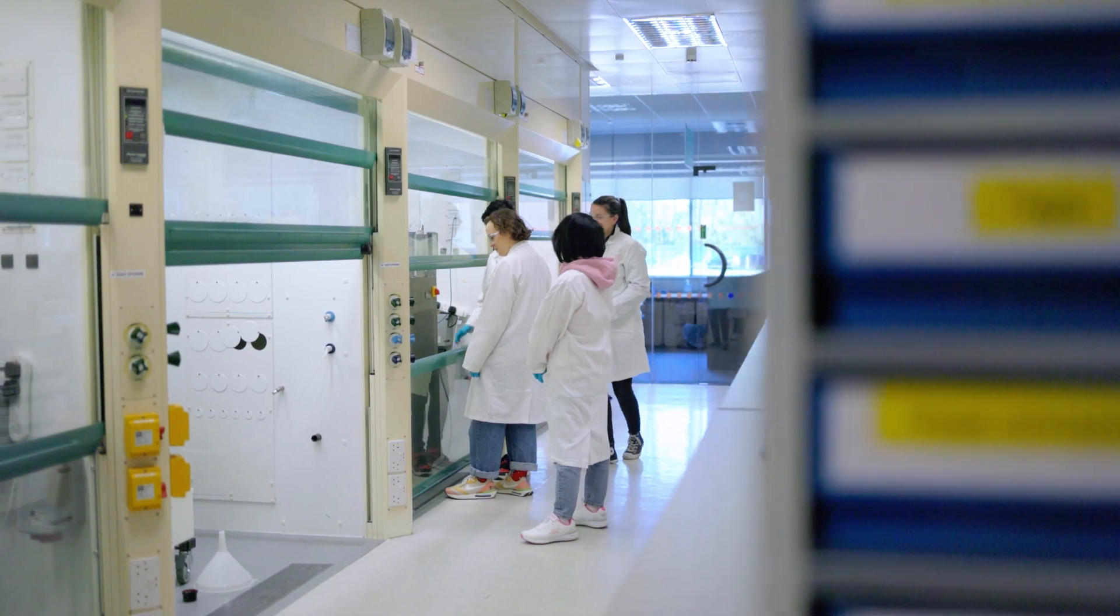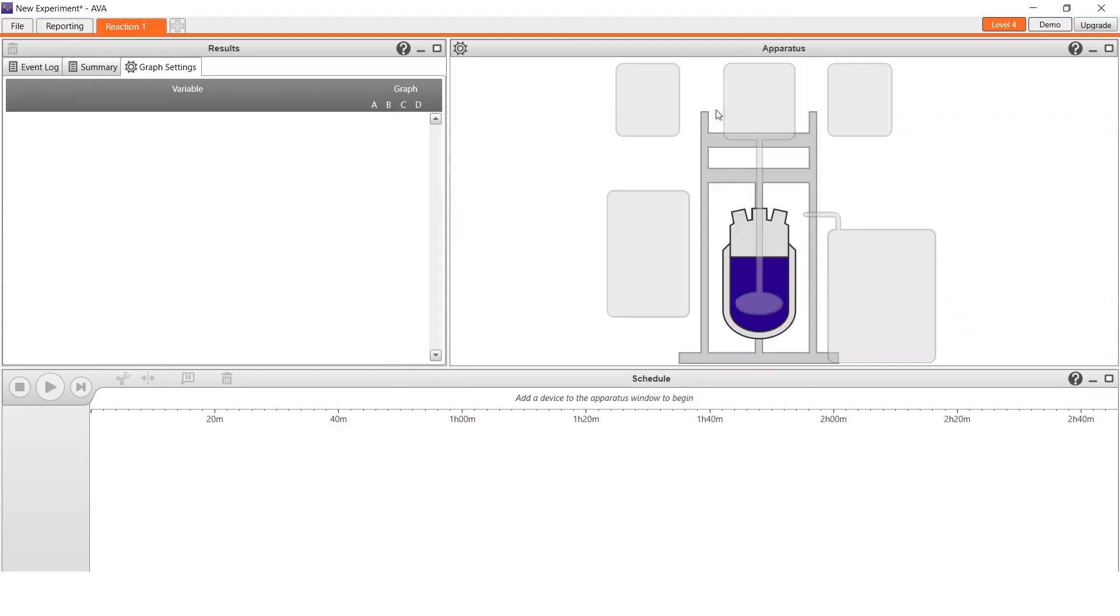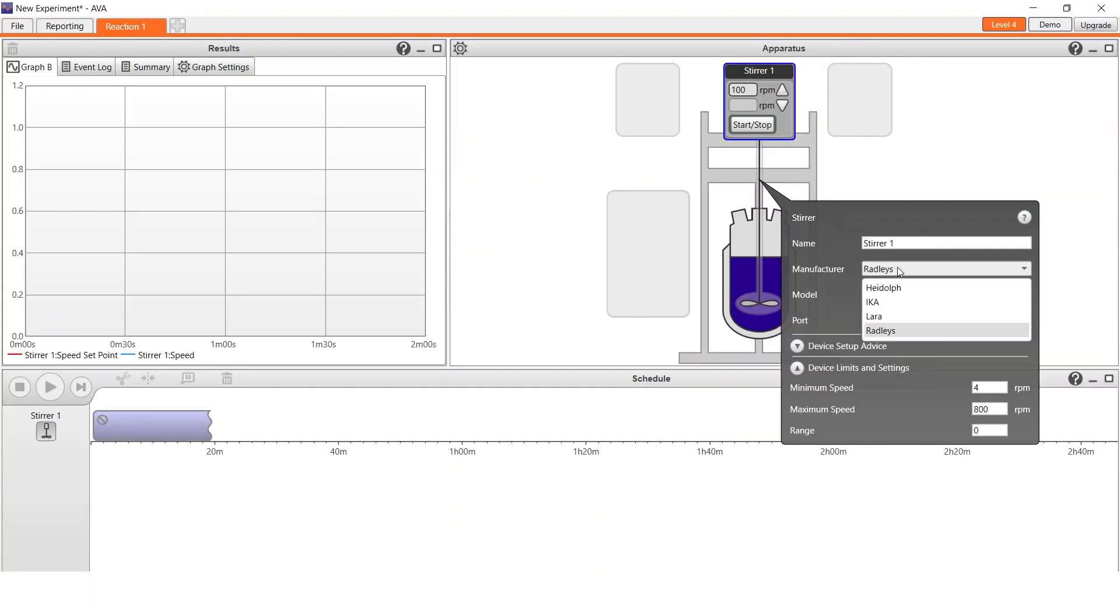My name is Paul Shaw. I'm a senior research chemist here at Chambour Molecular. I lead projects anywhere from route scouting, route development, all the way up to scale-up and manufacturing. In the lab we have two 20 liter fixed vessels and a double-jacketed 10 liter. We also use a LARA as well. These are all operated by the Ava software.